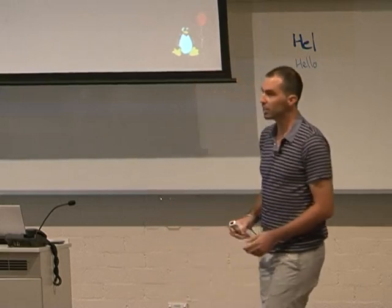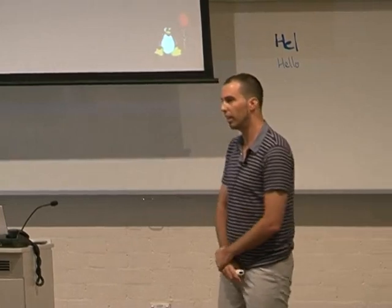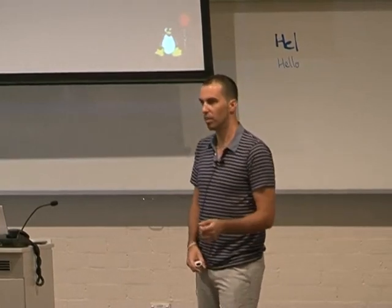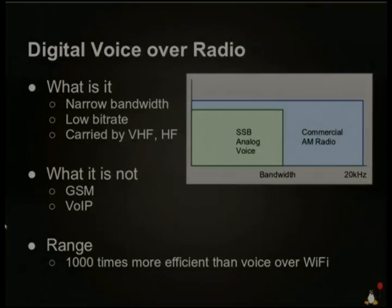Let's discuss the bandwidth requirements for the codec. The bandwidth of commercial AM radio is somewhere between 10 and 20 kilohertz — that's what you listen to on ABC radio in your car. Amateur radio operators use single sideband analog voice, which is about half the bandwidth that AM radio uses.